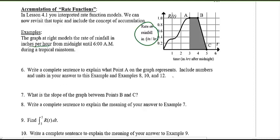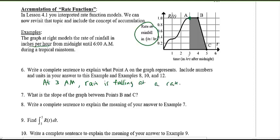Part six asks: write a complete sentence to explain what point A represents. Point A has an x-value of 3, meaning it's at 3 a.m. The y-value is not the amount of rain but the rate of rainfall. So: at 3 a.m., the rain is falling at a rate of 1 inch per hour. Units must be included.